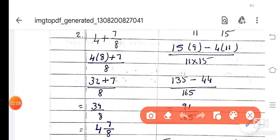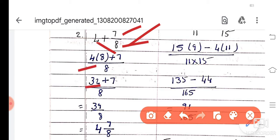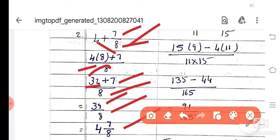Next question: 4 plus 7 by 8 is here. 8 into 4 plus 7, whole divided by 8. 4 eights are 32, plus 7, whole divided by 8. 32 plus 7 is 39 divided by 8. Without doing the division, I am writing it as 4 and 7 by 8. 8 4's are 32, and 32 plus 7 is 39, so you can write directly 4 and 7 by 8.